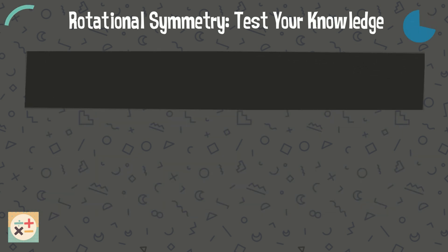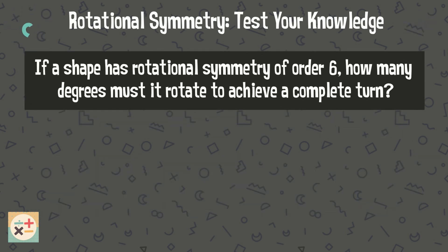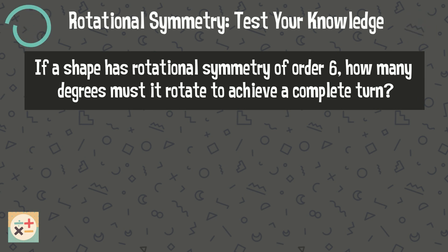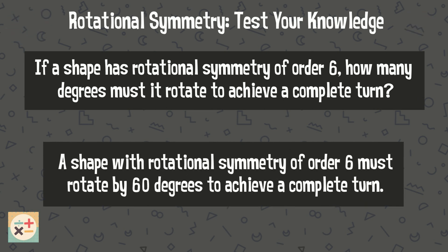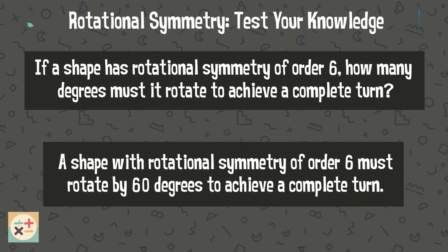Question 7: If a shape has rotational symmetry of order 6, how many degrees must it rotate to achieve a complete turn? A shape with rotational symmetry of order 6 must rotate by 60 degrees to achieve a complete turn.